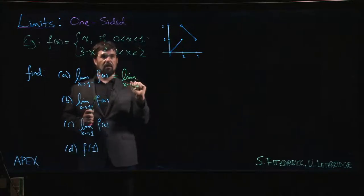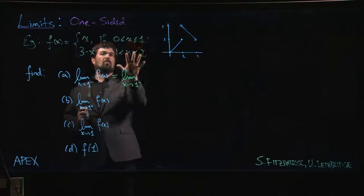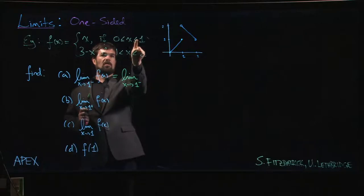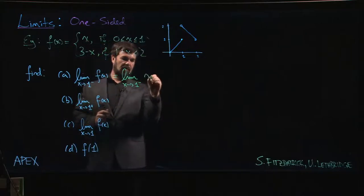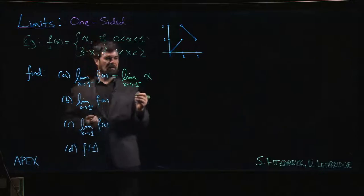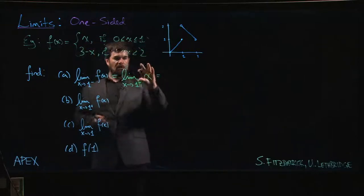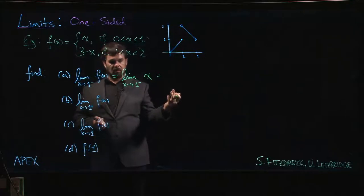We look at our piecewise defined function, we say okay x is approaching one from the left, that means we're looking at x values that are a little bit less than one. Which piece do I use? If x is less than one we see it here, so it's the limit of x as x approaches one from the left.